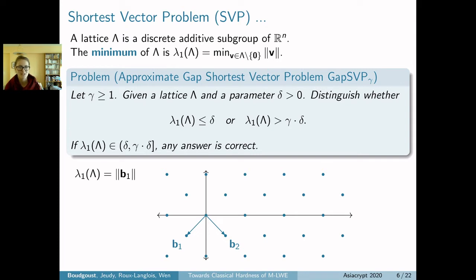As we like to draw pictures in dimension 2, here we have a lattice generated by two vectors b₁, b₂, and the minimum is the norm of b₁. I can give you a first δ₁, the blue circle radius, and you can answer directly that the minimum is smaller than δ₁. I can give you a second circle in orange of radius δ₂, and you can answer directly that the minimum is larger than twice this δ₂.